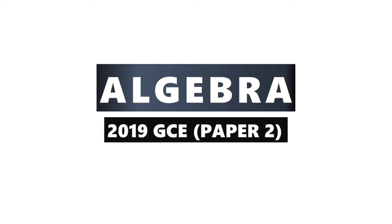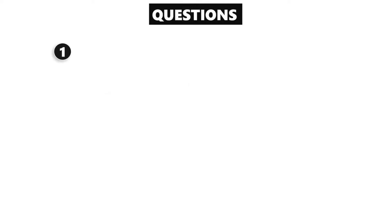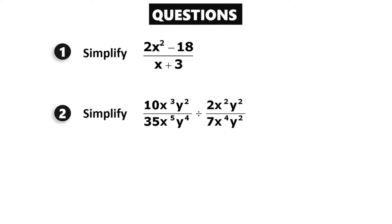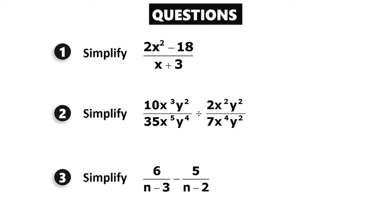In this video we're going to go through the algebra questions from 2019 GCE Paper 2. The questions are: simplify (2x² - 18)/(x + 3); simplify (10x³y²)/(35x⁵y⁴) divided by (2x²y²)/(7x⁴y²); and finally, simplify 6/(n - 3) minus 5/(n - 2).